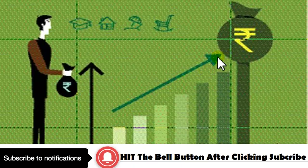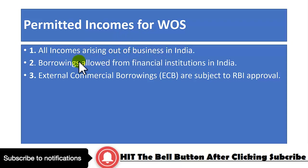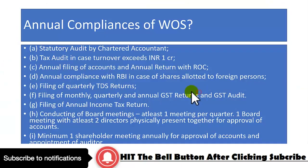Permitted incomes from a wholly owned subsidiary include all incomes arising out of business in India — all income arising out of India is permitted. Borrowings are allowed from financial institutions in India. External commercial borrowings are subject to RBI approvals. So all these kinds of funding options are available to you.